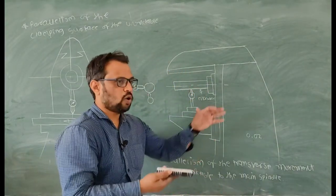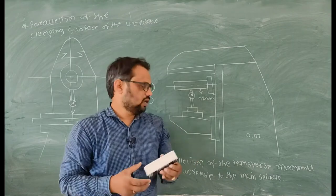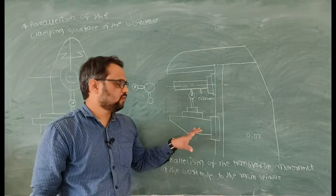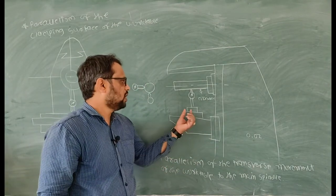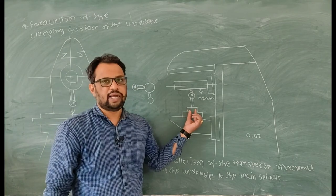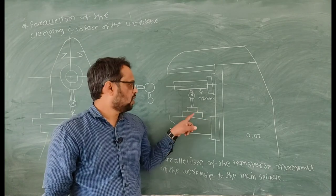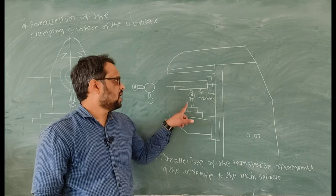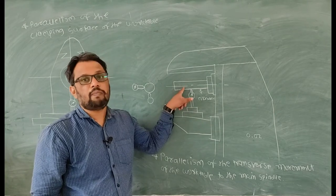In second case you have to check transverse movement. In this case what I am going to do is put a flat base of your dial indicator or V block on your clamping surface and touch the dial indicator point to the mandrel.